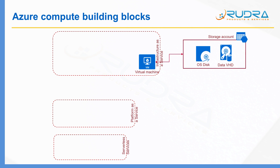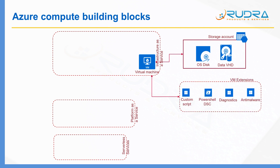One common requirement when deploying Virtual Machines in the Cloud is to apply some configuration on top of that Virtual Machine, such as running some scripts. For that purpose, Azure provides a number of extensions, such as Custom Script, PowerShell DSC — which stands for Desired State Configuration. You can have a Diagnostics Extension to collect all the logs emitted from that Virtual Machine, and also anti-malware software to protect it against viruses.